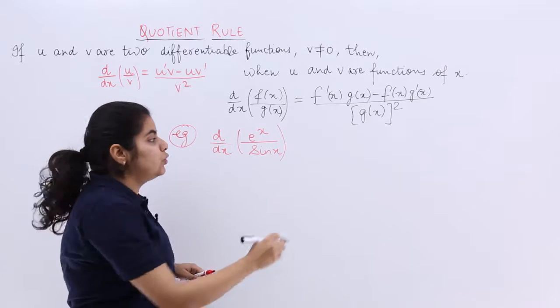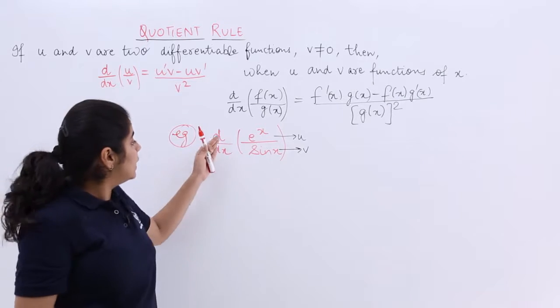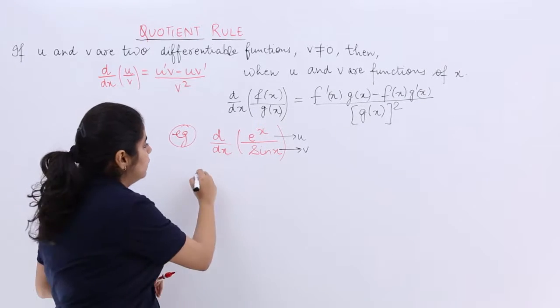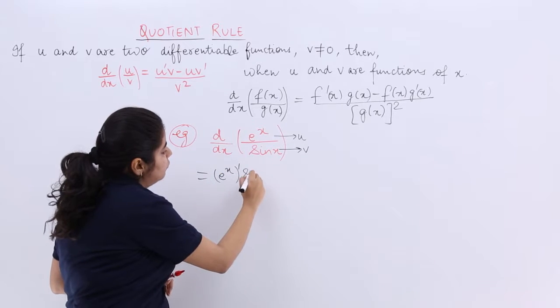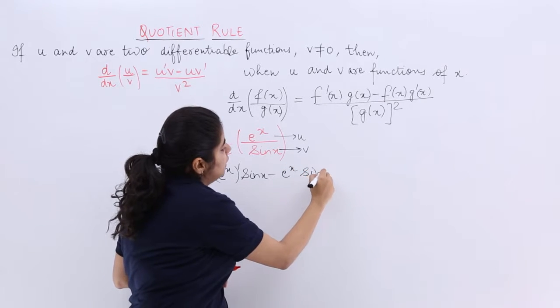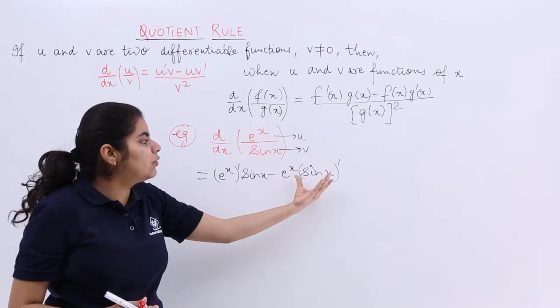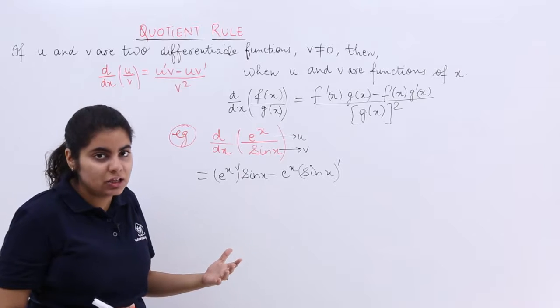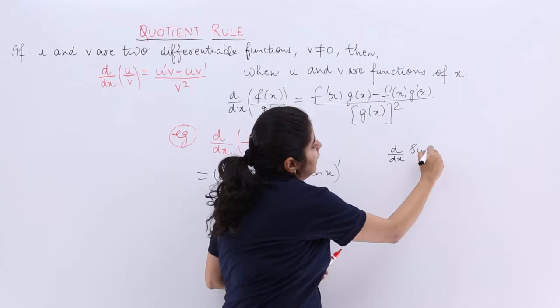Now what is your u? u means the numerator. What is your v? v means the denominator. d by dx of e raised to the power x upon sin x will be u dash v minus u v dash. Although do not write in exam this manner. Don't write sin x raised to the power dash because it does not mean anything as such.